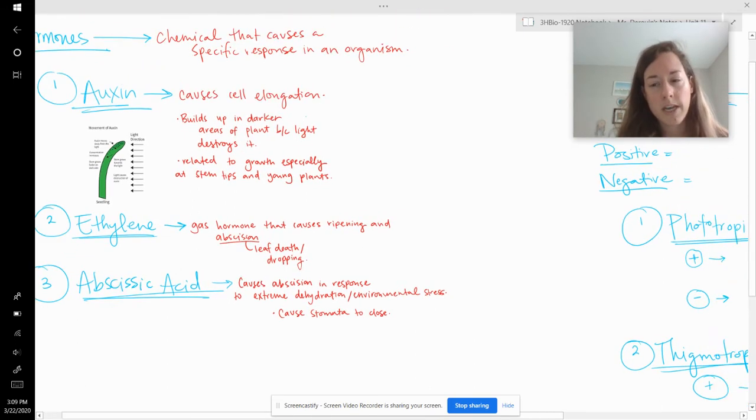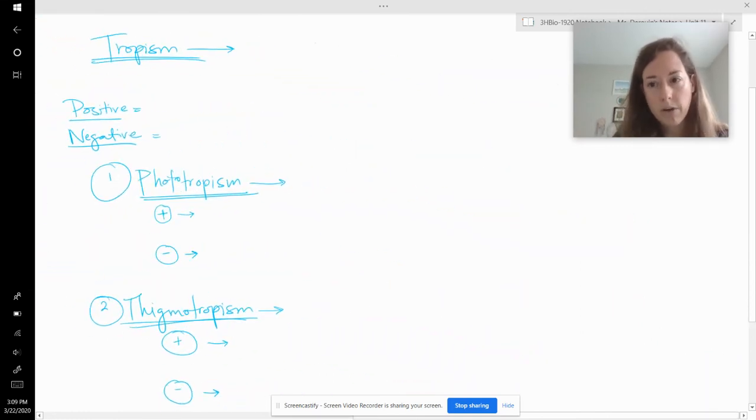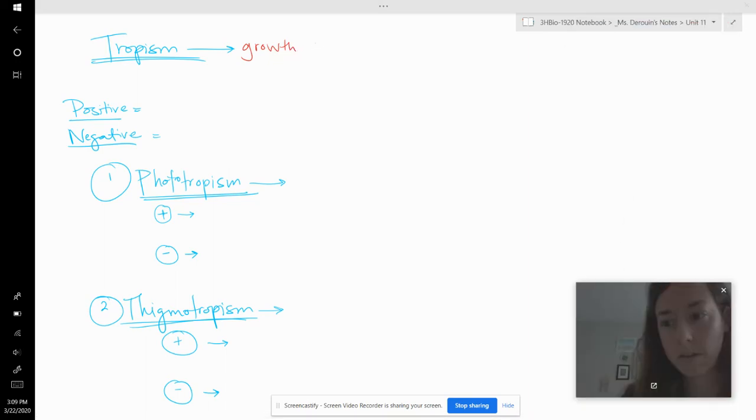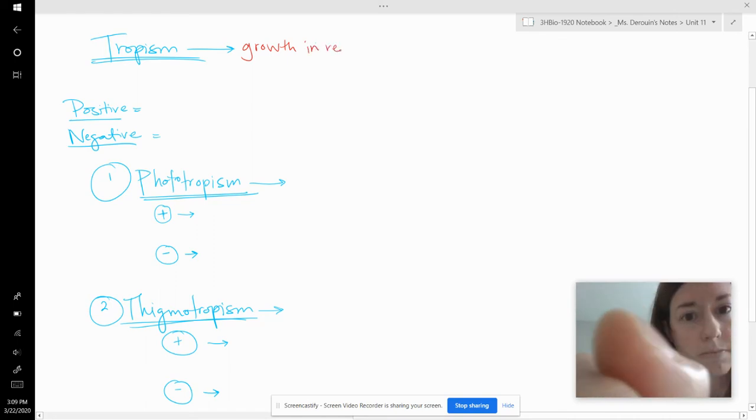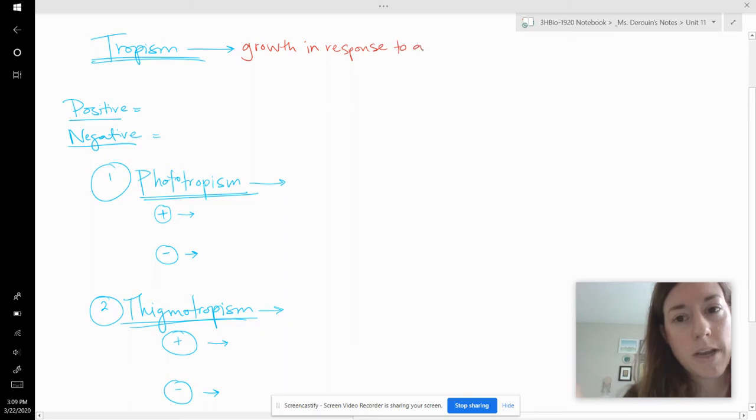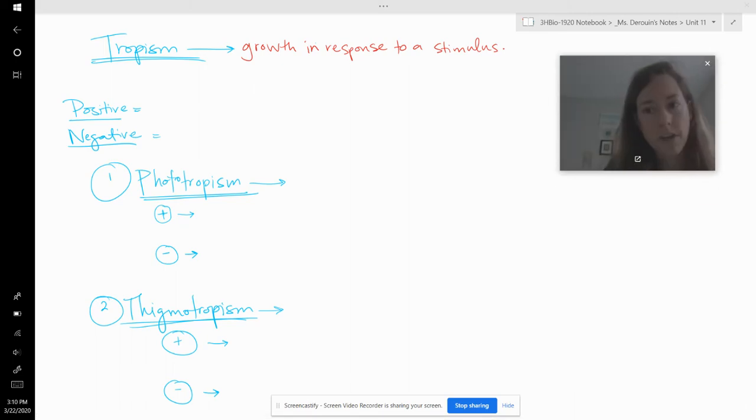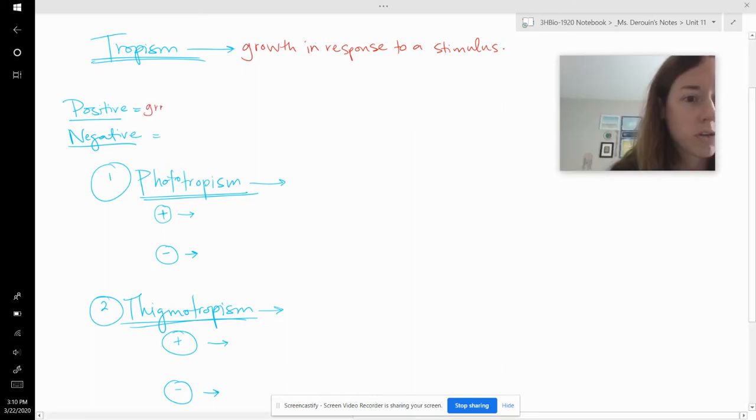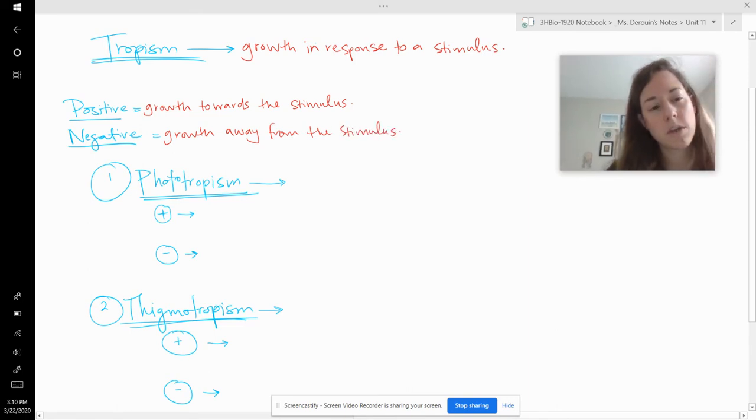And then what these hormones do is they cause the plant to grow in specific ways. And when we talk about plants growing in specific ways, that's called tropism. So tropism is growth in response to a stimulus or an environmental factor. So the growth could either be positive or negative. And if it's positive, it's growth towards the stimulus. And if it's negative, then it's going to be growth away from the stimulus. So for each of the ones that I tell you about, I'm going to give you a positive example and a negative example of that tropism.